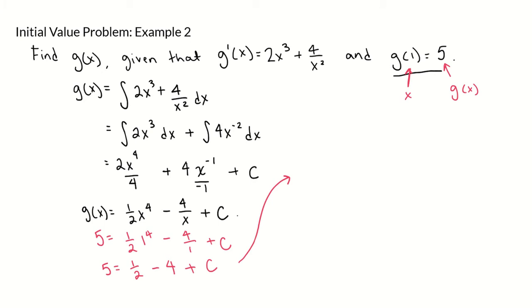And this will be 5 equals negative 3 and a half, or 3.5, plus c. And we're going to get that our constant is 8 and a half, or 17 over 2.